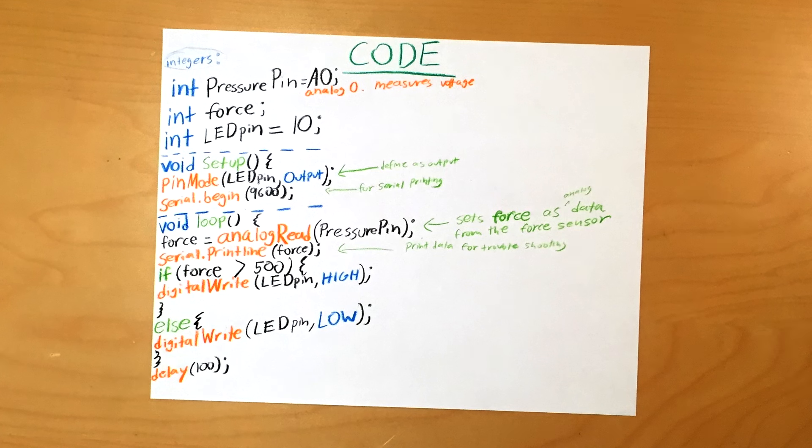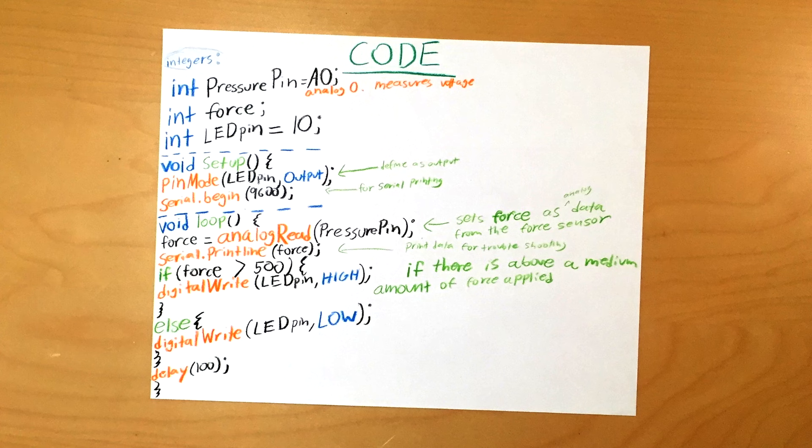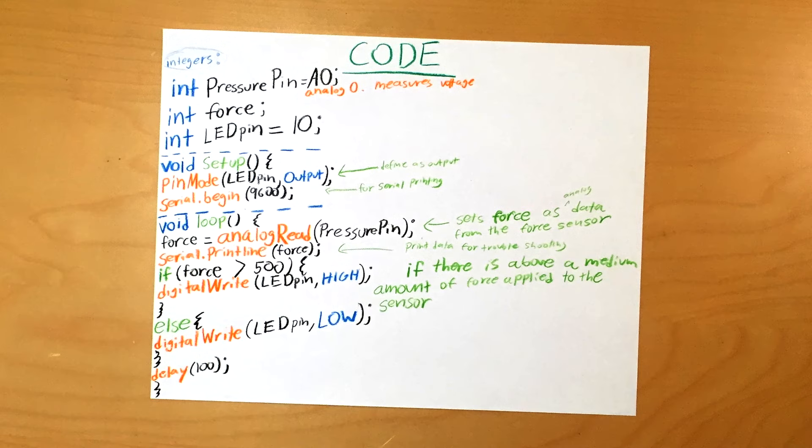After the else statement, write delay 100. In summary, this code says that if there is above a medium amount of force applied to the sensor, then turn the LED on. Otherwise, turn the LED off. That wraps up the programming part.